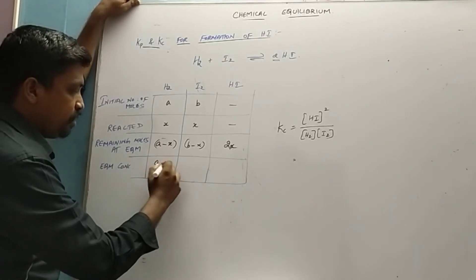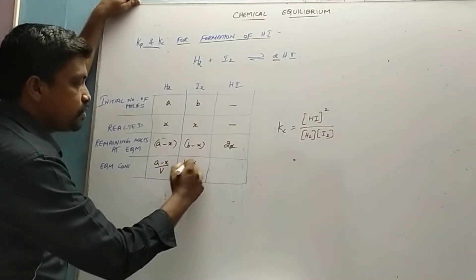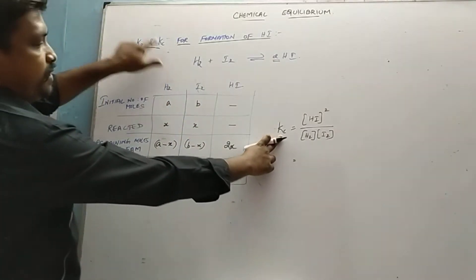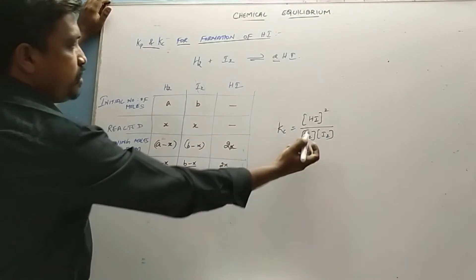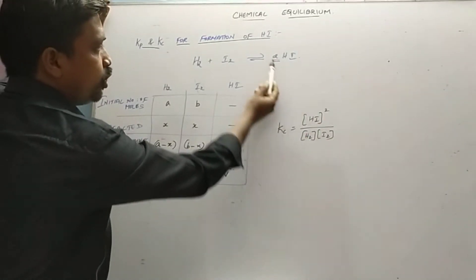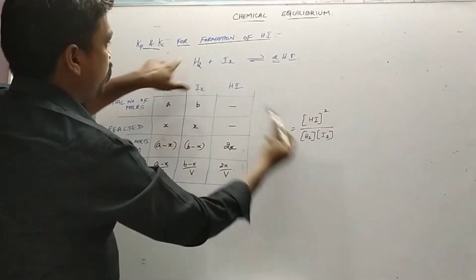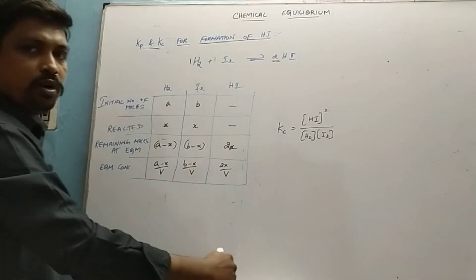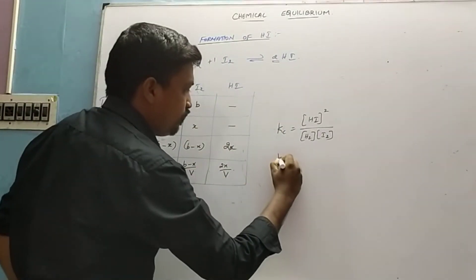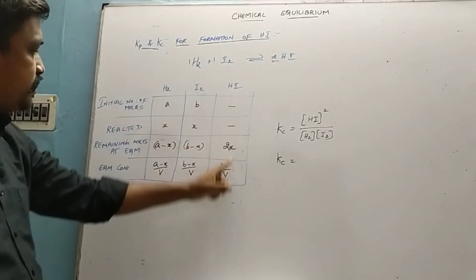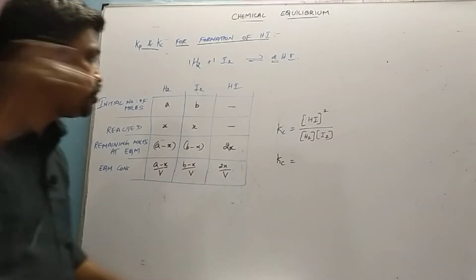We are going to write Kc first. Kc means concentration of the product HI to the power two divided by concentration of hydrogen and iodine power one. From the tabular column, the concentration of HI is 2x by V, so it's (2x/V) squared.